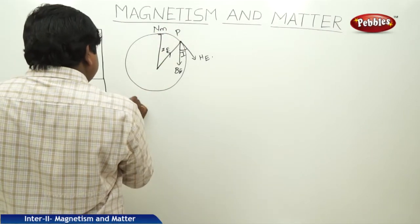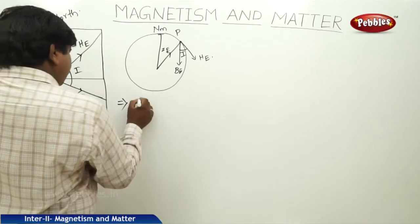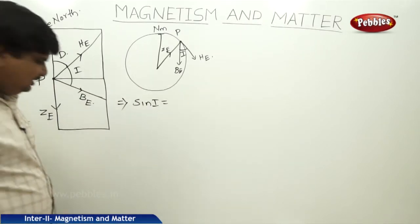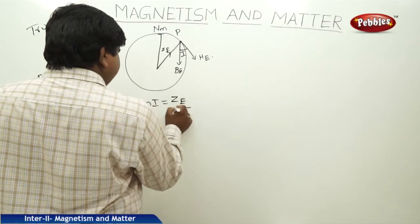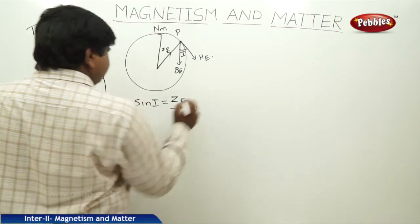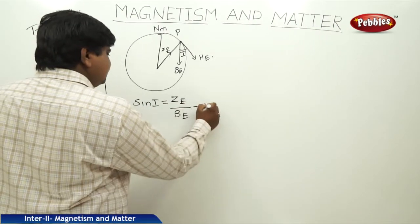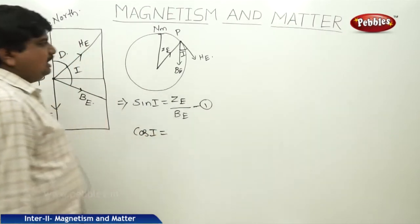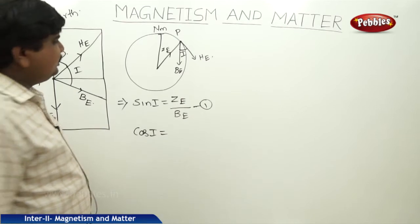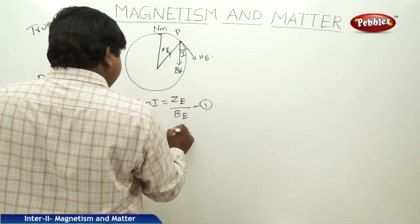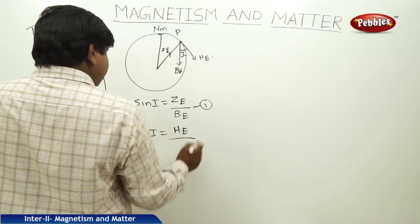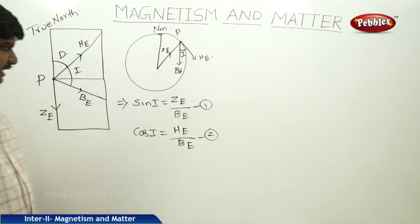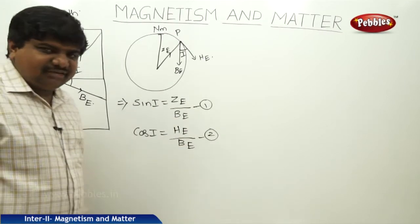From the same structure, what is sin I? It is opposite side by hypotenuse, so we can write sin I = ZE/BE. Let us call this equation 1. Cos I is adjacent side by hypotenuse; the adjacent side is HE and the hypotenuse is BE. Now I am dividing equation 1 by equation 2.